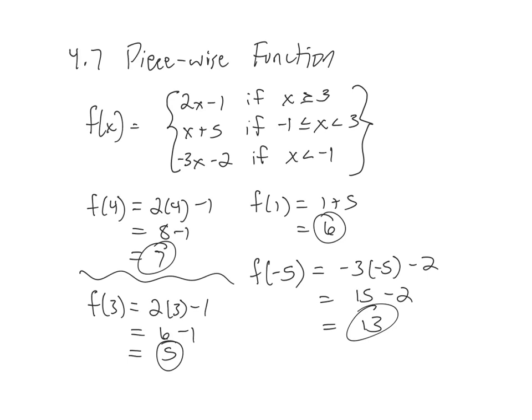For f of negative 1, negative 1 is in the middle one and it's on the bottom. Where's the 'and equal'? It's in the middle one, so I would do negative 1 plus 5 is positive 4.